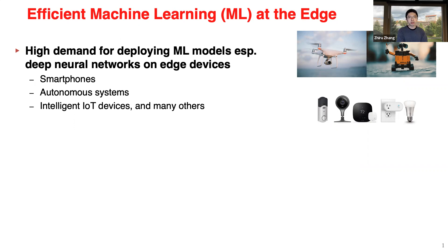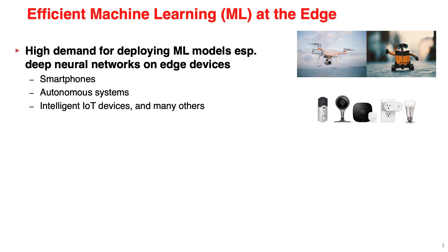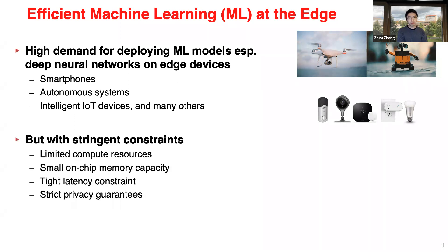The overarching goal here is to enable efficient machine learning, especially deep learning at the edge. There are a lot of applications and demand for more efficient ML on embedded and mobile devices — smartphones, autonomous systems, and IoT devices. There are many constraints: very limited compute resources, scarce memory resources, and in many cases we have to deal with real-time constraints, tight latency budgets, and privacy concerns as well.